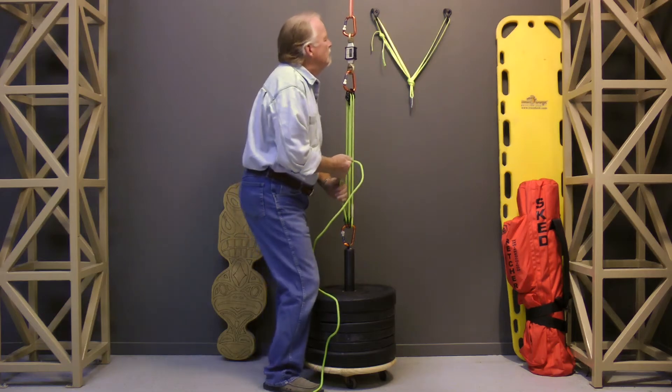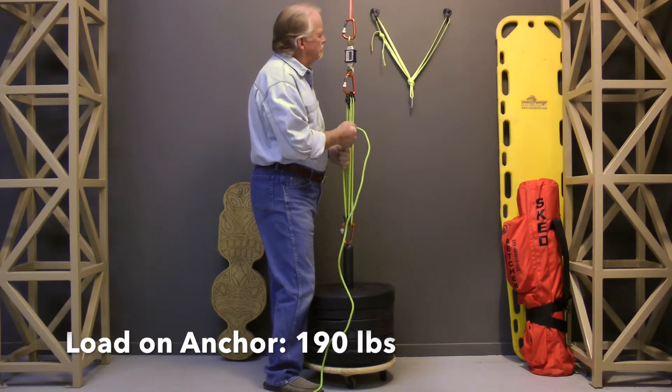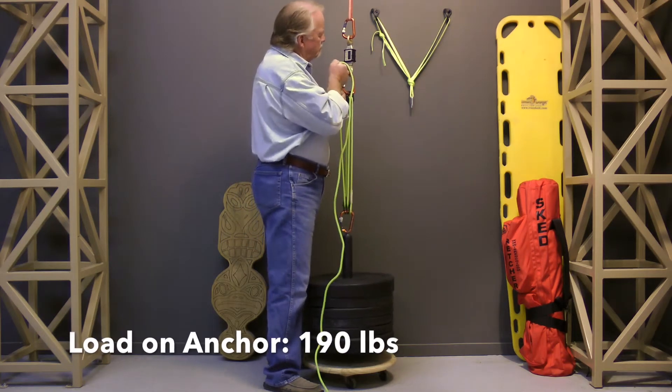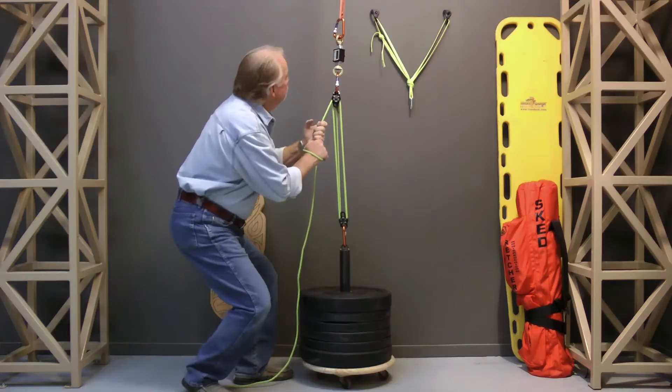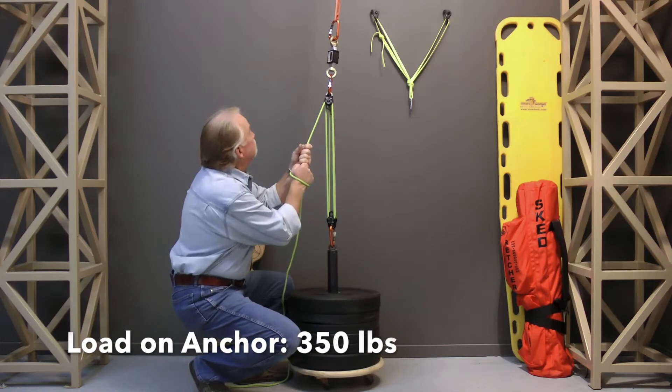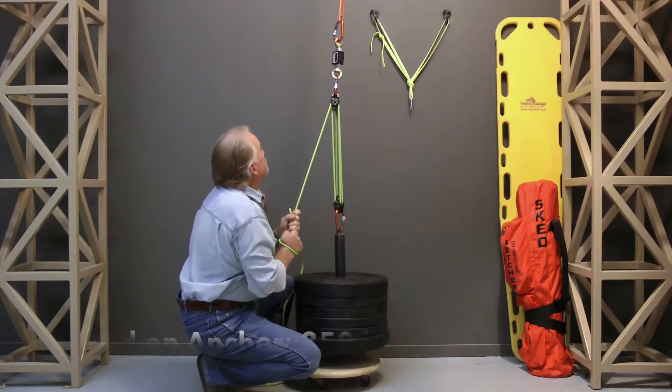The load to be lifted in this demonstration is 250 pounds. While lifting up on the rope using a 5 to 1 mechanical advantage, the load on the anchor was 190 pounds. While pulling down on the rope using a 4 to 1 mechanical advantage with a change of direction, the load on the anchor was 350 pounds.